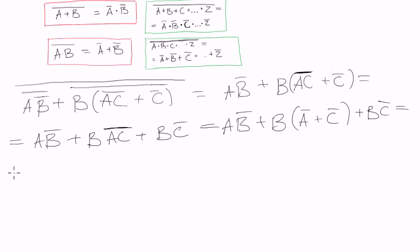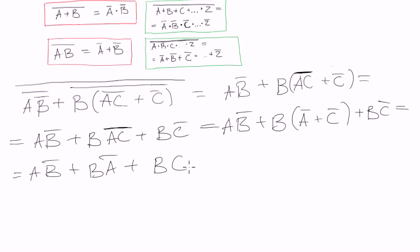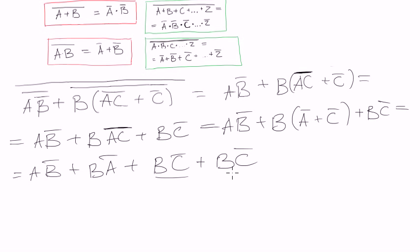And then probably the last step. We rewrite A·B negated plus, open the bracket, we get B·A negated, plus B·C negated, plus B·C negated. We get B·C negated twice!